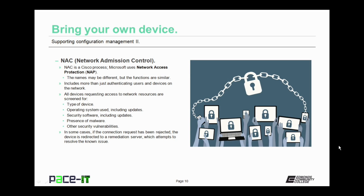Network admission control is a Cisco process. Microsoft uses a similar process, but it's called Network Access Protection, or NAP. While their names may be different, they still function in the same way. NAC includes more than just authenticating users and devices on the network. All of the devices that are requesting access to network resources are screened for the type of device that it is, the operating system that's used, including any updates that are present. NAC will also check for security software, making sure that it's up to date.